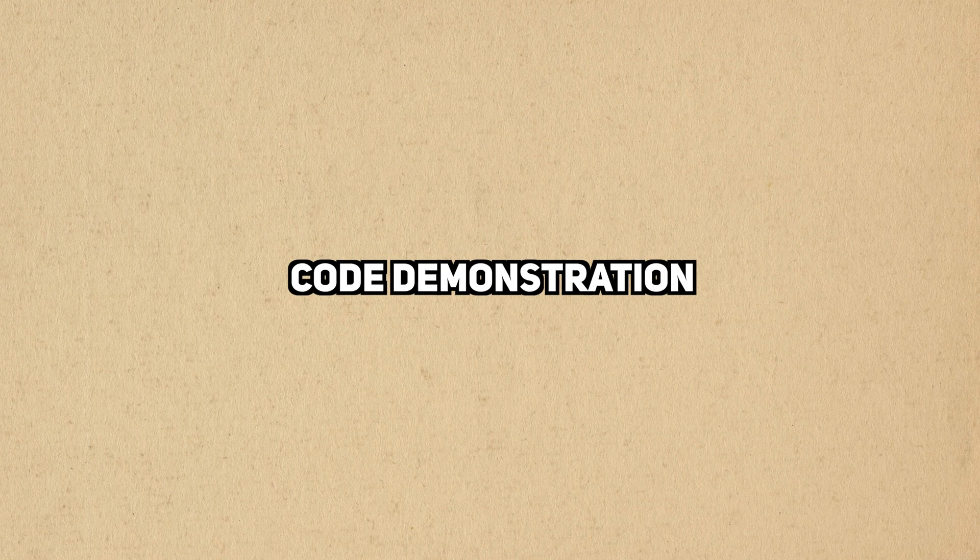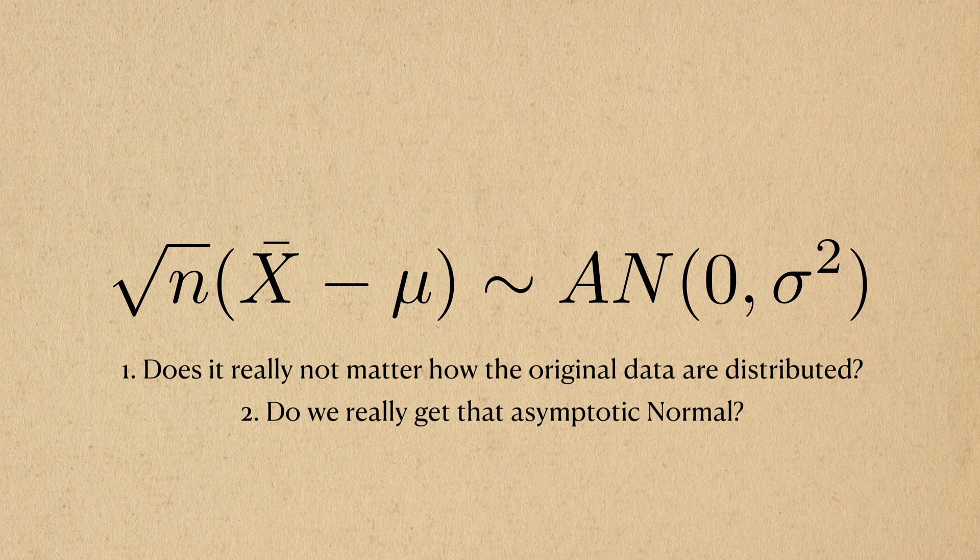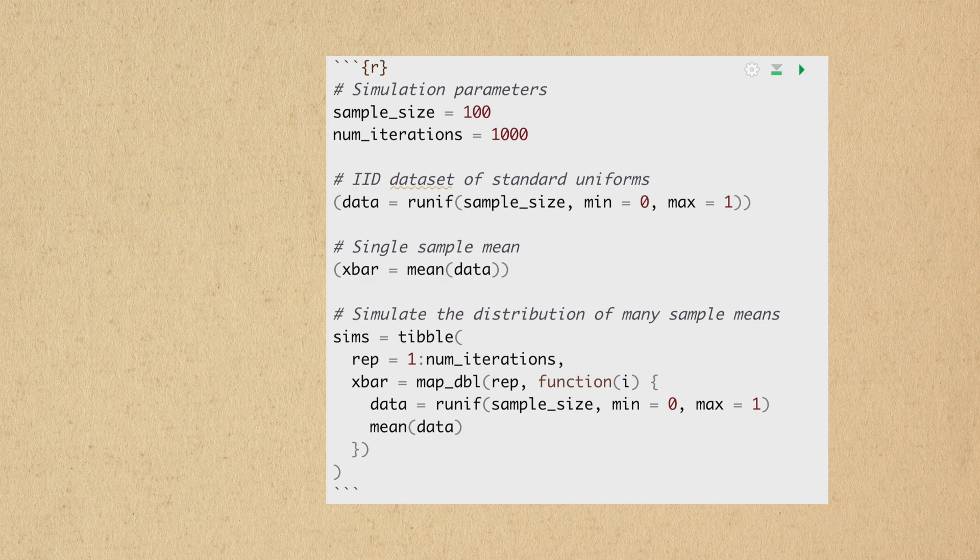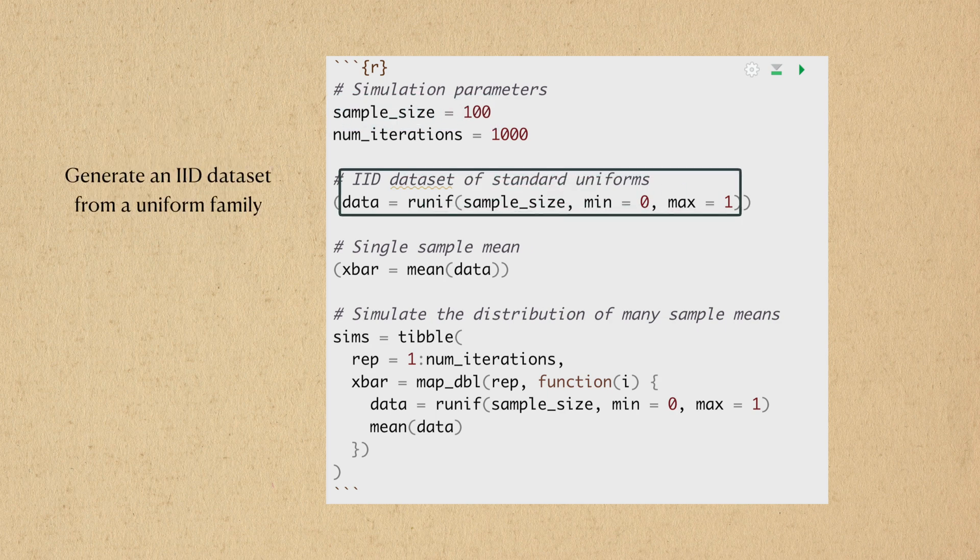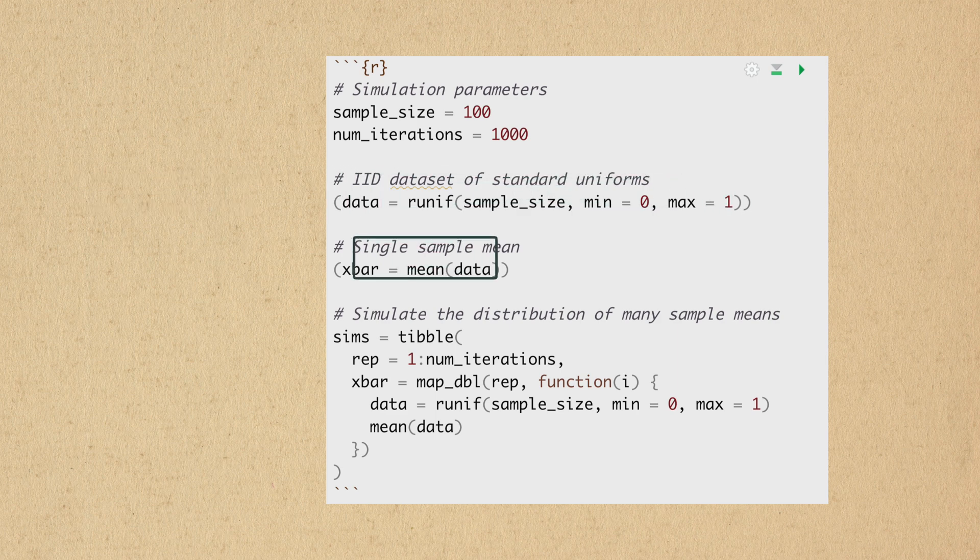For our code demonstration, we'll prove to ourselves that it actually doesn't matter how the data itself is distributed, and that the distribution of the sample mean will be approximately normal. To do this, I've written the following code. The central limit theorem requires that a lot of data is used. So I'll set a sample size of 100 for all the sample means I create. I'll assume that 100 data points is enough for asymptotics to kick in. Then I need to actually simulate the data. So I'll use the rUnit function to generate a dataset of 100 independent and identically distributed observations from a standard uniform distribution. Then we'll calculate the sample mean.